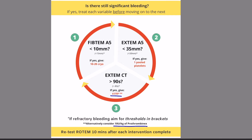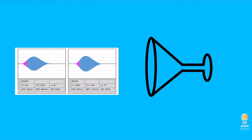Importantly, in the event of refractory bleeding, higher thresholds should be targeted, and these are listed in brackets. At this point, it is important to remember that if your rotom trace is adopting the shape of an inverted martini glass, or the lysis index is over 7.5%, you may need another dose of tranexamic acid. It's also worth remembering that guidelines advocate for a second dose of 1 gram of TXA if bleeding continues after 30 minutes in major obstetric haemorrhage.